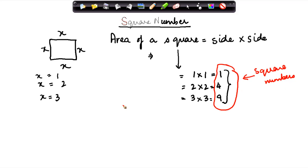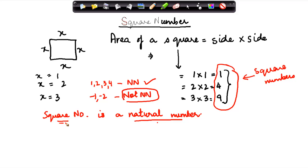Now by definition, a square number is a natural number. Please note, square number is a natural number. Now what are natural numbers? Natural numbers are basically 1, 2, 3, 4. These are natural numbers. Minus 1, minus 2, these are not natural numbers.